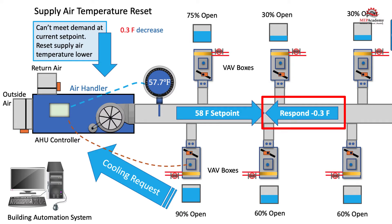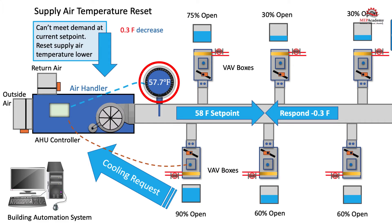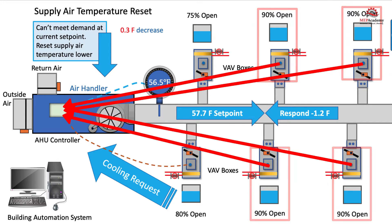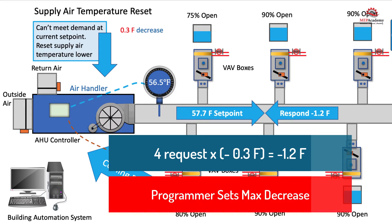For example, by 0.3 degrees Fahrenheit. If the temperature was trimmed up to 58 degrees before a request was made, the request would decrease the supply air temperature to 57.7 degrees Fahrenheit. If multiple VAV boxes send requests at the same time, the value is multiplied by the number of requests. If four VAV boxes sent a request for more cooling, the supply air temperature could be reset by 4 times 0.3 degrees Fahrenheit, for a total of 1.2 degrees decrease. The controls programmer will limit how much the supply air temperature can be decreased at any one time, no matter how many requests are sent, allowing system stability.